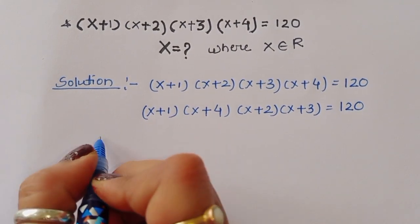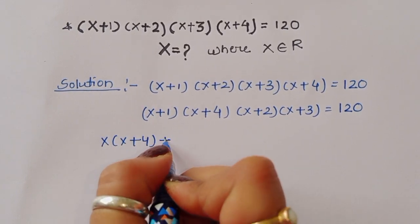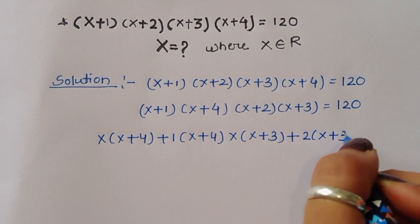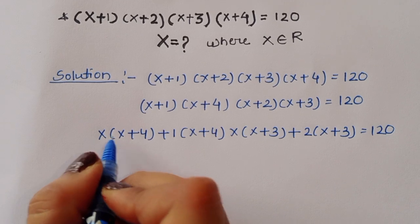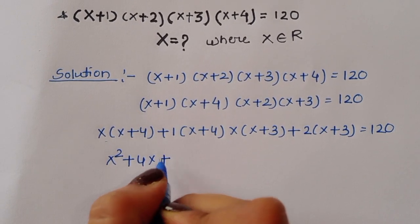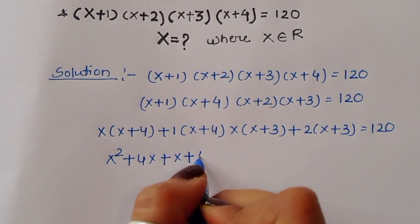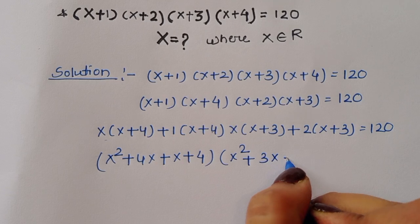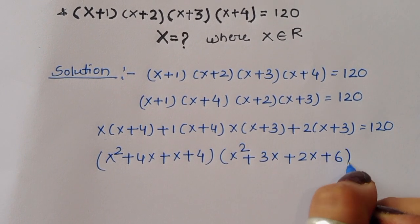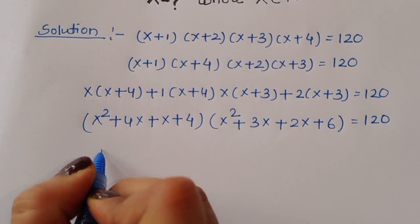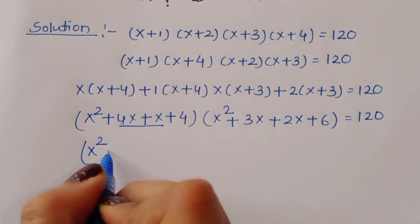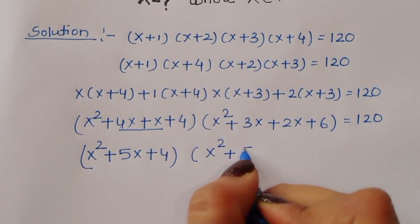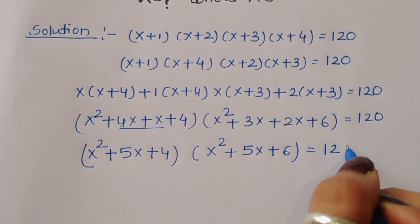Expanding: x(x+4) + 1(x+4) for the first group, and x(x+3) + 2(x+3) for the second, equals 120. This gives us x²+4x+x+4 times x²+3x+2x+6 = 120, which simplifies to (x²+5x+4)(x²+5x+6) = 120.